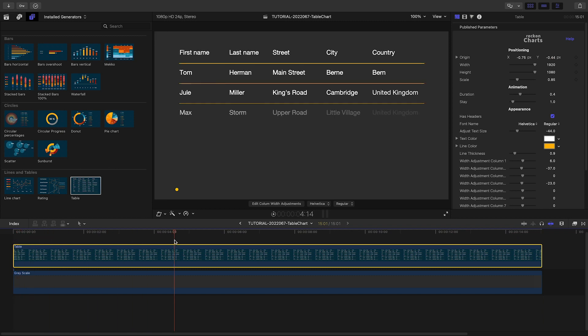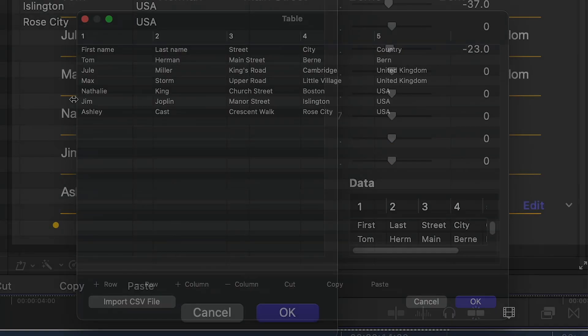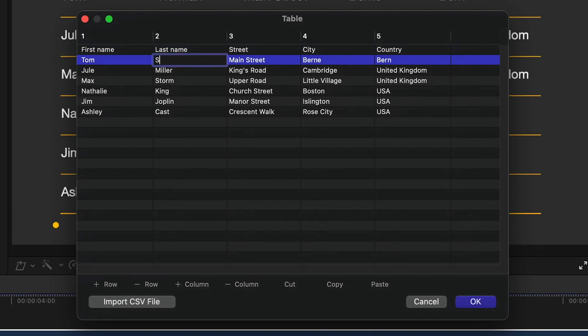To load up the data, I'll go to the Table section and click Edit. This gives us a spreadsheet view where we can manually edit our data. Or, even quicker,